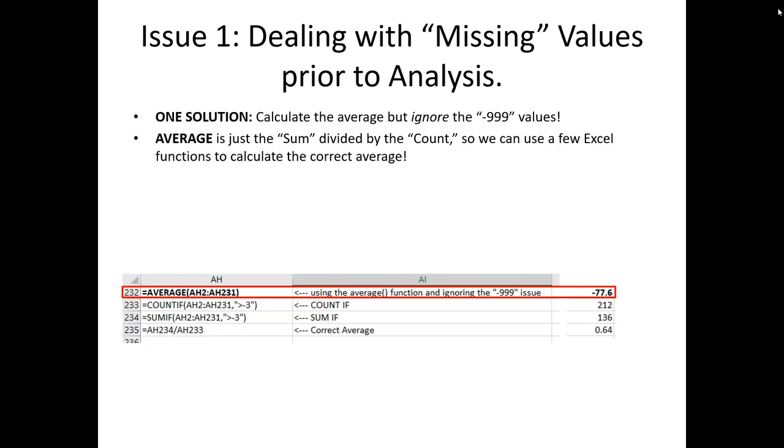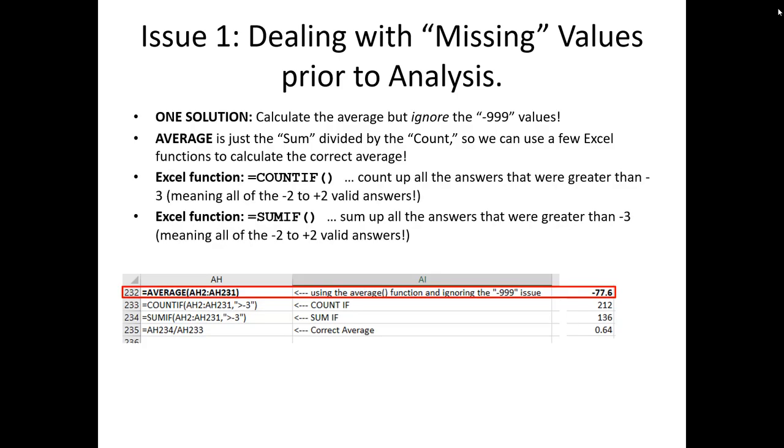First, we see the average function as normal, selecting column AH where they got that. And we see that on the far right side here, if we actually use this function, we would get negative 77.6. What we're going to do instead is build up to the correct average. We're going to first use a COUNTIF function. The COUNTIF function down here is going to count all the records, all of the 230 records, only if an individual selected an answer that was greater than negative 3. And that results in 212 answers of the 230. Now, why does this work? Remember the only valid answers from our perspective for this analysis is negative 2 to positive 2. We don't want to include the negative 999. So that only counted up if it's greater than negative 3.